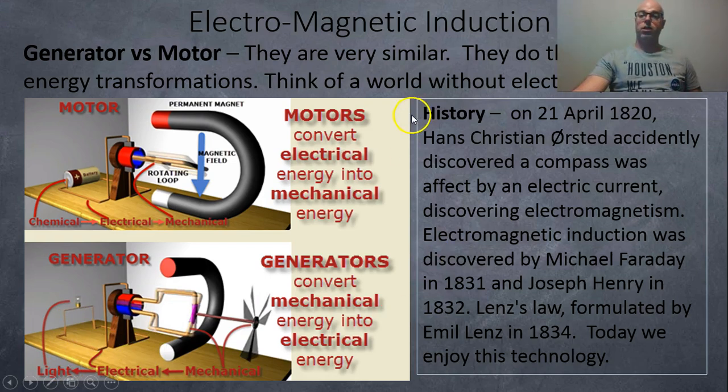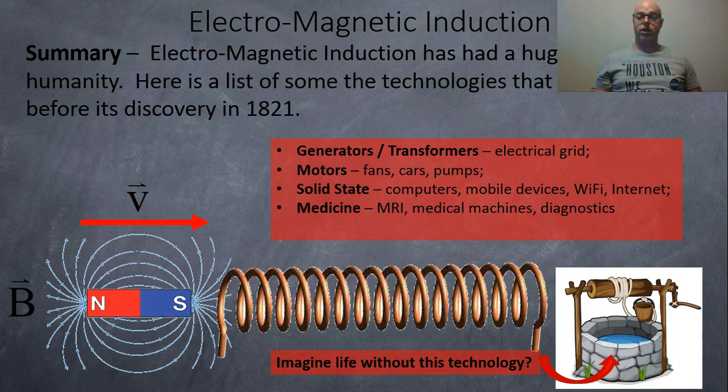So the history of this, on April 21st, 1820, Hans Christian Ørsted accidentally discovered the compass was affected by the electric current in the experiment he was working with and he discovered electromagnetism. Electromagnetic induction was discovered by Faraday in 1831 and Joseph Henry in 1832 separately, independently. And then Lenz's Law was formed in 1834. And today, thanks to that, we have lots of amazing technology that we would not have without having had this discovery.